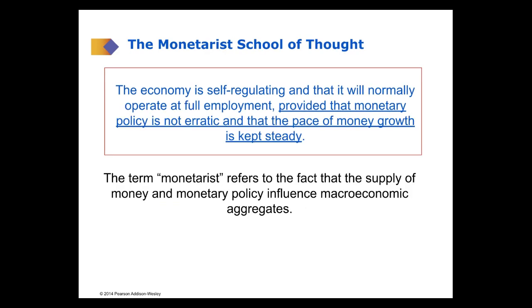The monetarist school of thought shares the idea that the economy would be self-regulating and efficient and tend towards equilibrium and full employment, as long as monetary policy was correct. The monetary policy had to be not erratic, and essentially the amount of money in the economy had to be kept steady and proportional to the growth of the economy and the growth of output. So as long as you had the monetary policy correct, then your macroeconomics would also be correct.